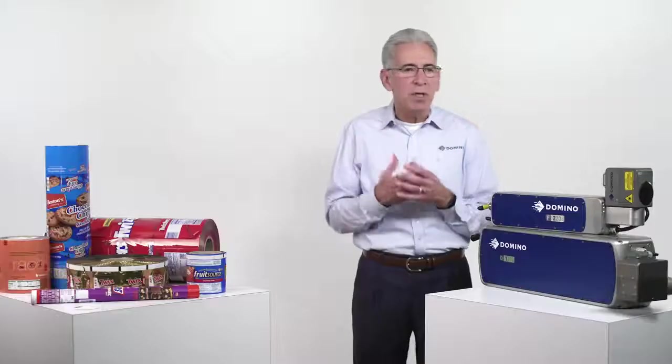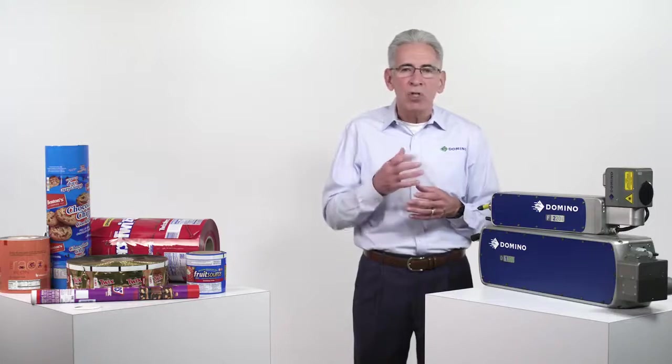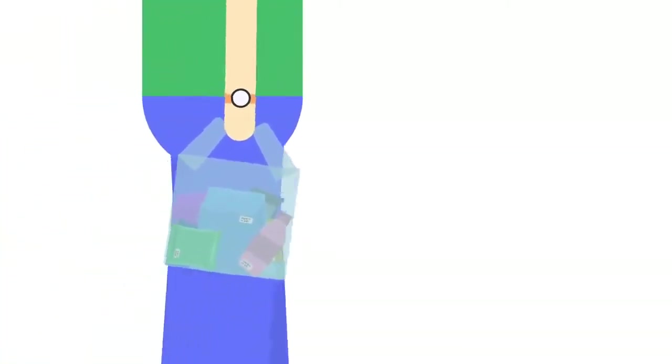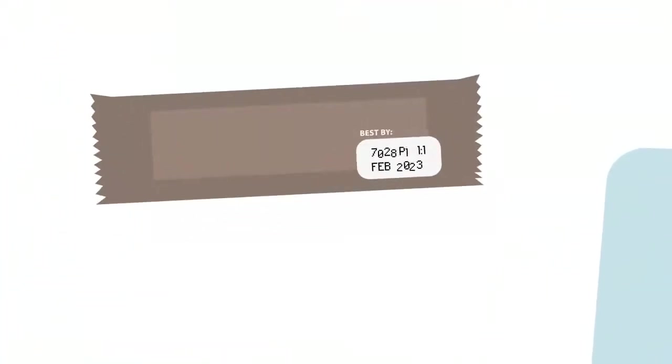One of our customers illustrated the problem by bringing a big clear plastic bag full of his products into a meeting at Domino and setting them on the table. He said, what do you think of the codes? We started to dig into the bag. He said no, just look through the bag. We looked at the codes, and sure enough, they weren't great. There were missing parts, just not really good codes.